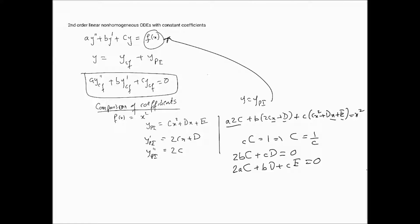That particular integral, combined with the complementary function — which is a general solution with two arbitrary constants — gives the full general solution. Since this is a second order differential equation, we need two arbitrary constants. Once we have both the complementary function and the particular integral, we apply any boundary or initial conditions given to calculate those constants.